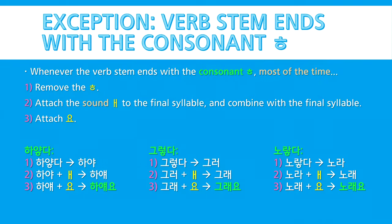Let's go over this exception. Whenever the verb stem ends with the consonant ㅎ, most of the time you'll remove the ㅎ, and then you'll attach the sound 아 to the final syllable and combine it with that final syllable, and finally attach 요. So the verb 하얗다 would become 하얘요. 그렇다 becomes 그래요. And 노랗다 becomes 노래요.